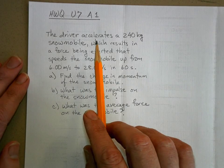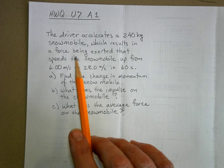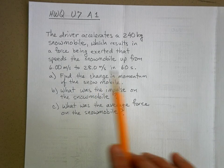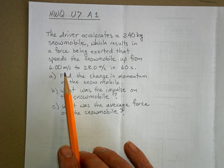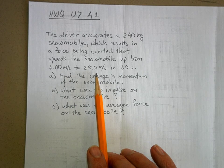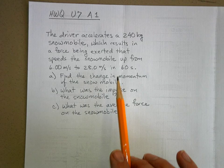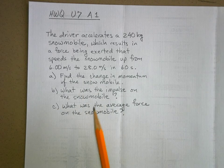Here's the problem. The driver accelerates a 240 kilogram snowmobile, which results in a force being exerted that speeds the snowmobile up from 6 to 28 meters per second. 28 meters per second is really fast. I'm not sure you can make a snowmobile go that fast, but in 60 seconds.